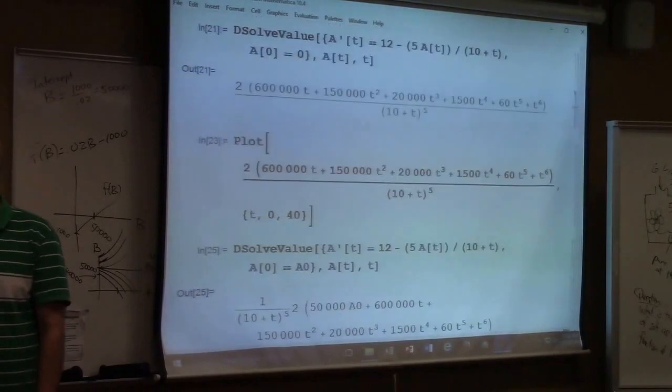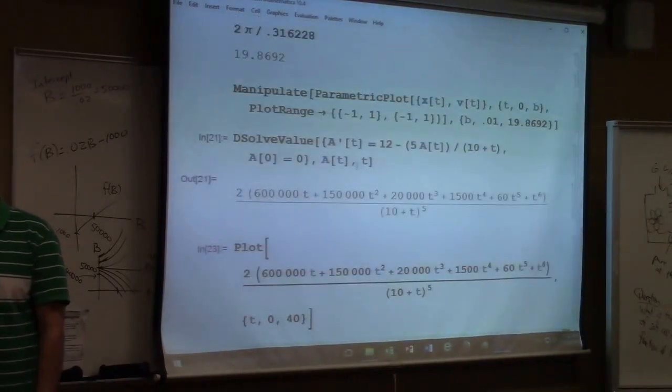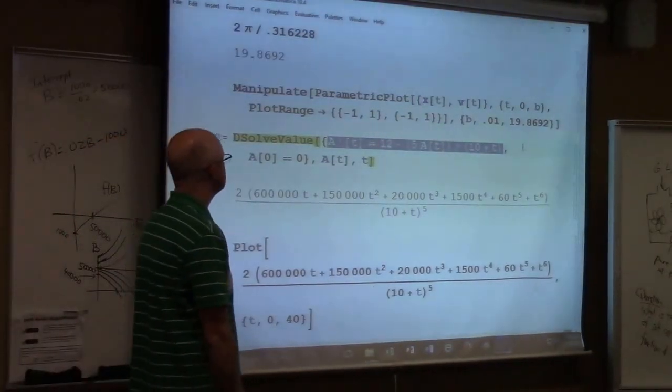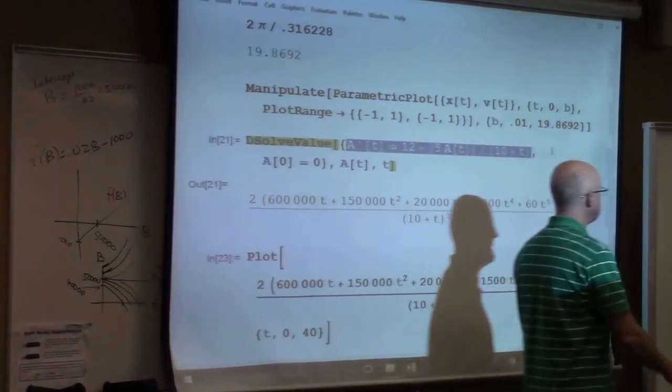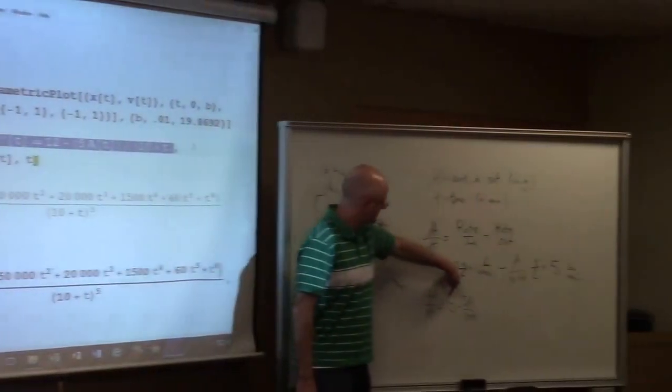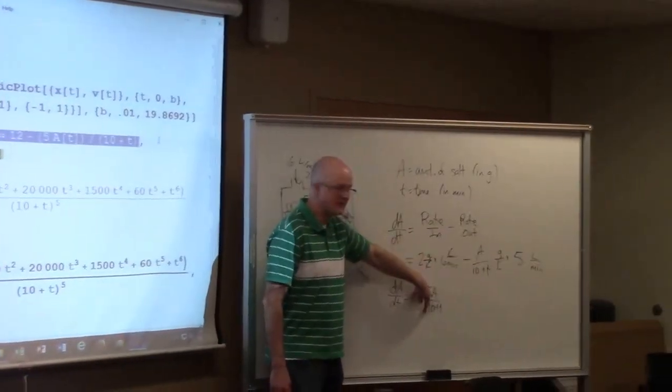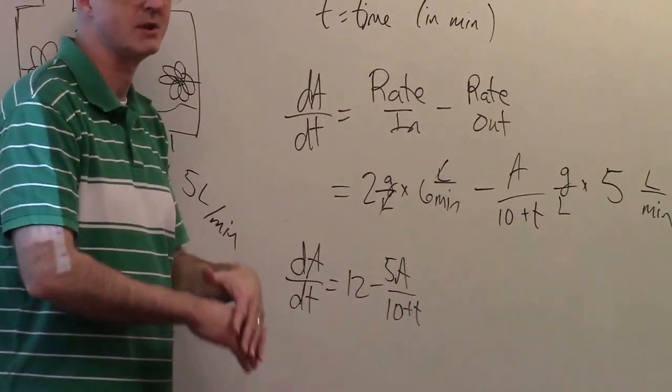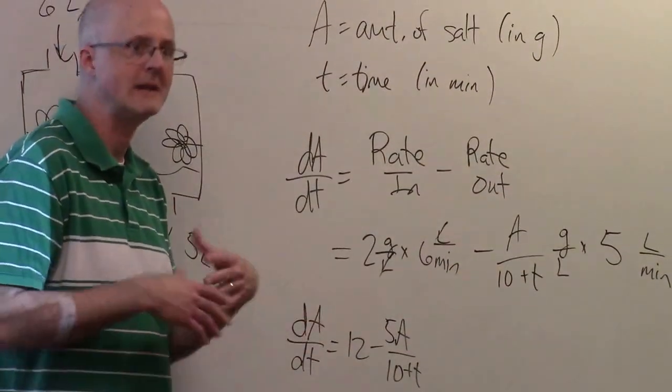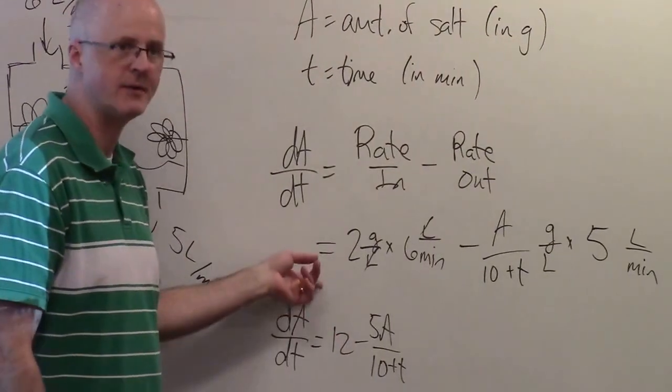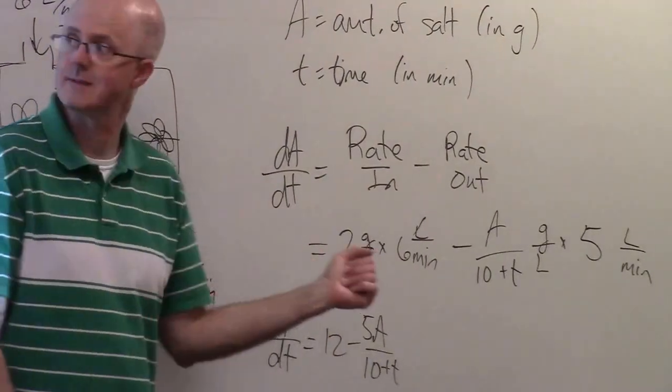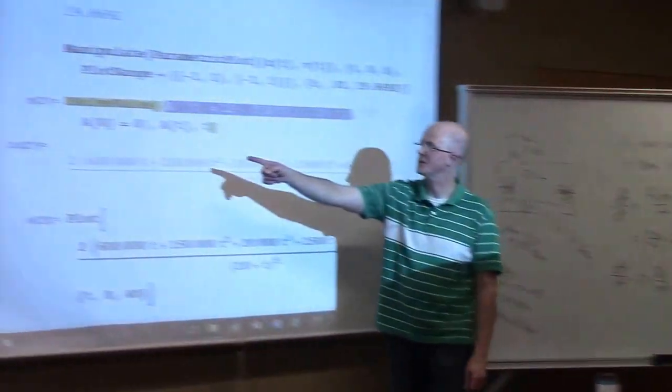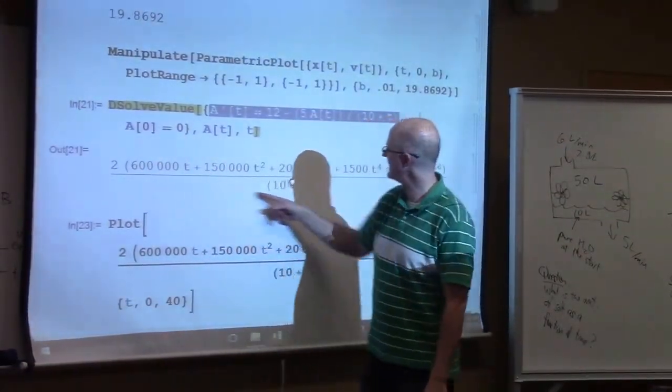The mixing problem had a differential equation. It's on the board as well: dA/dt equals 12 minus 5A over 10 plus T. I said you can't solve that equation by separation of variables, so we do not know how to solve it. If you take DTEQ in the spring, I will teach you how to solve an equation like this. But we had Mathematica solve it with this initial condition.